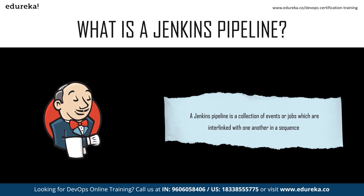It is used to incorporate continuous delivery in our software development workflow. In a Jenkins pipeline, every job has some dependency on at least one or more jobs or events. A continuous delivery pipeline contains a collection of various states such as build, deploy, test, release, etc. A continuous delivery pipeline is basically an automated expression of your process for getting software from version control, involving developing the software in a repeatable and reliable manner and progression through multiple stages of testing and deployment.